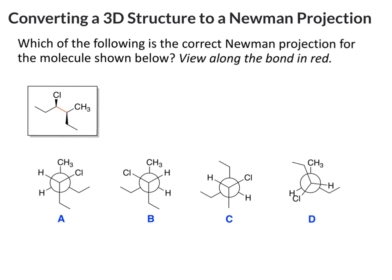For this, what we want to do is go ahead and spot that our front carbon is going to be the one with the chlorine on it, no matter which of these answers we're looking at. So this is our front carbon. This will be our back carbon.